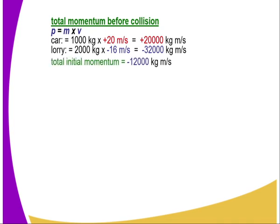Therefore, total initial momentum is the sum of the two which gives us a total of -12,000 kg m per second.